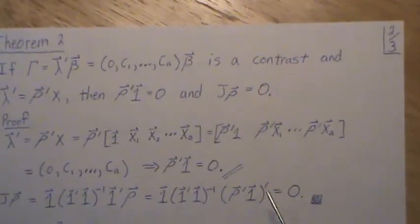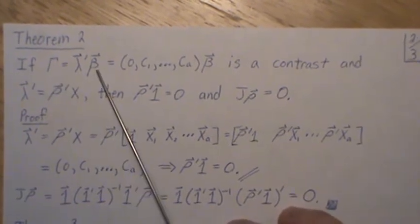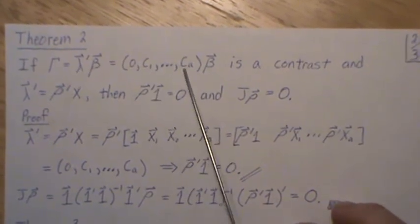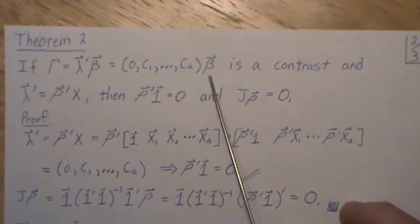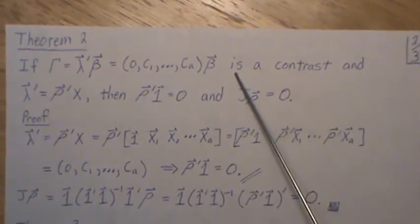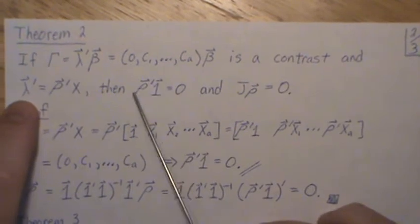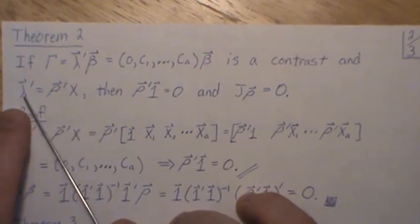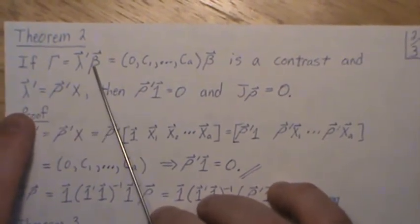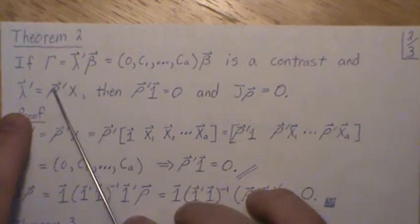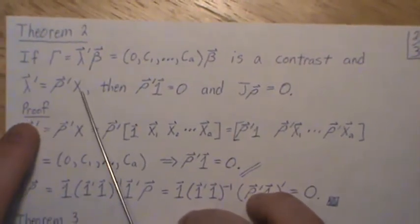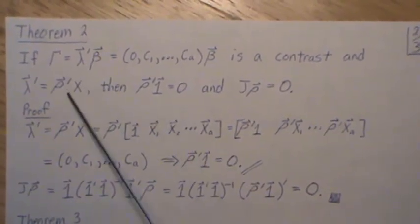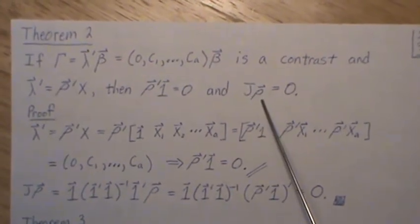Theorem two: if gamma is a contrast — meaning the first component is zero and the remaining coefficients form the linear combination of the tau's — and it is estimable, then lambda must be in the row space of the design matrix. From this, rho prime times one equals zero, meaning those coefficients sum to zero, and J rho equals zero.